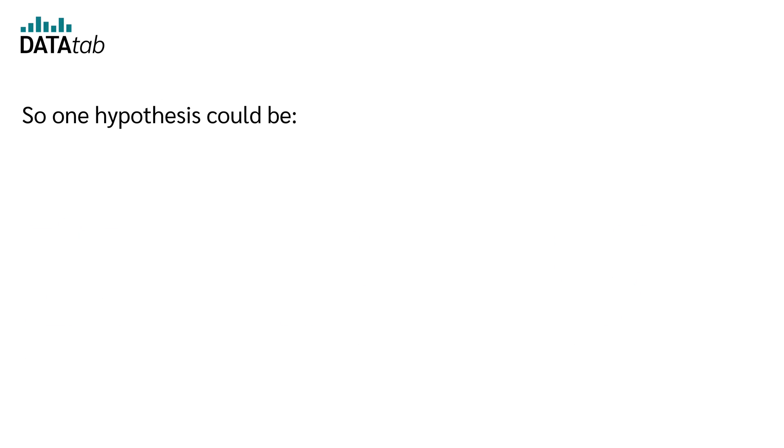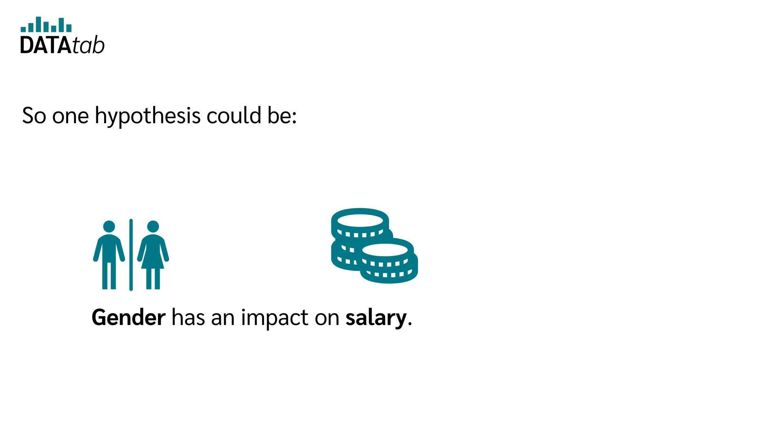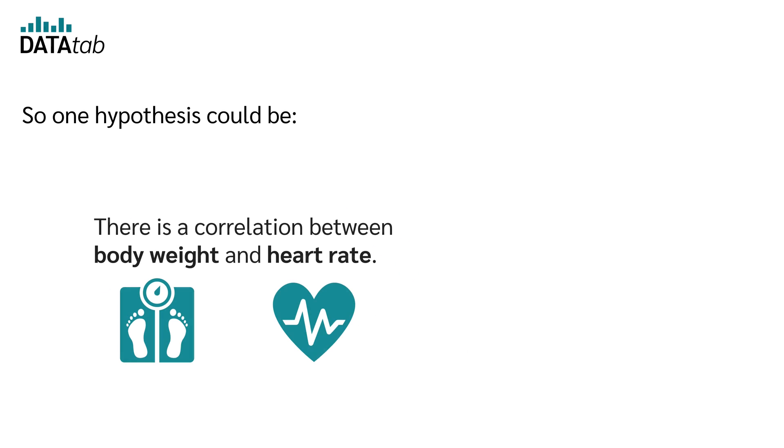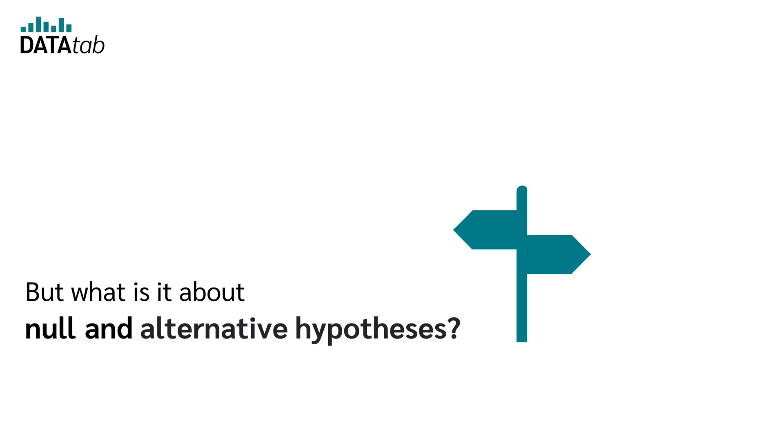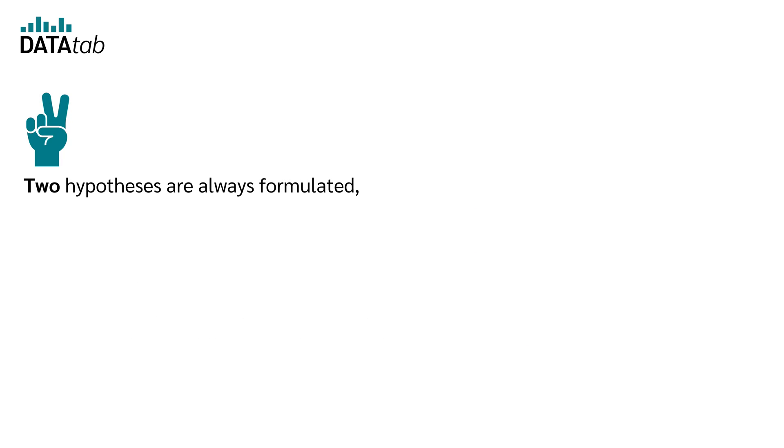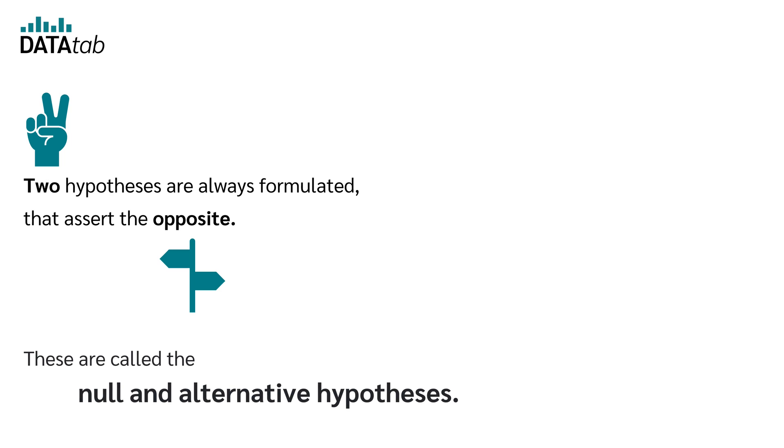So one hypothesis could be gender has an impact on salary or there is a correlation between body weight and heart rate. But what is it about null and alternative hypotheses? Two hypotheses are always formulated that assert the opposite. These are called the null and alternative hypotheses.